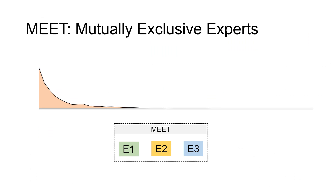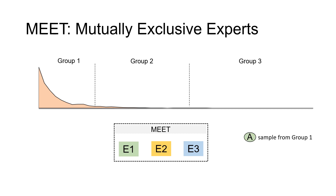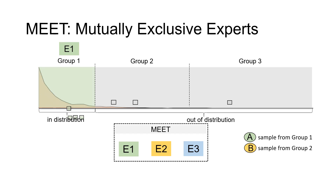To further debias V2, we propose MEET, a Mutually Exclusive Expert Learning setup. It starts by splitting the dataset, sorted based on its predicate frequency distribution, into multiple groups. Considering three experts: Expert 1 is trained on in-distribution samples from group 1 and out-of-distribution samples from groups 2 and 3. Expert 1 predicts a relation for sample A while sample B is out of its classification space.